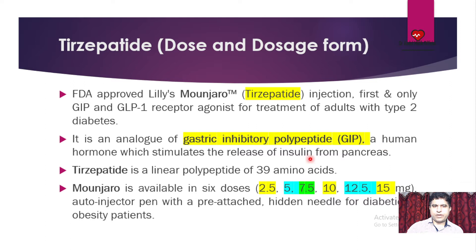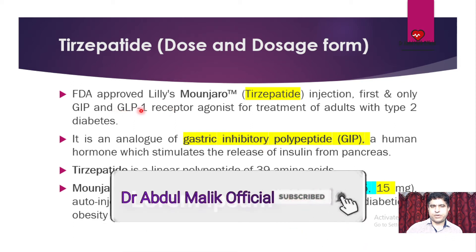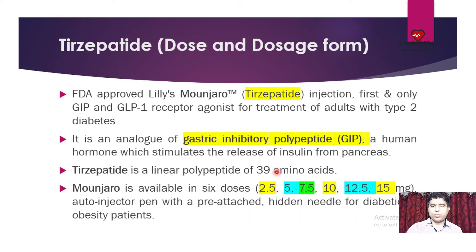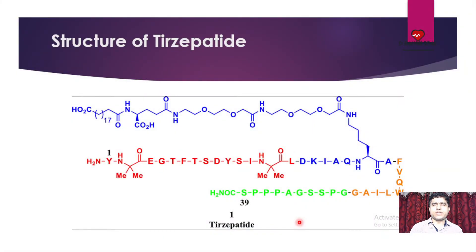Tirzepatide is a human hormone which stimulates release of insulin from the pancreas. It is not only working on GIP but also has a dual effect on GLP-1. Tirzepatide is a linear polypeptide of 39 amino acids. Mounjaro is available in six dosages: 2.5, 5, 7.5, 10, 12.5, and 15 milligram auto-injector pen with pre-attached hidden needle for diabetic and obesity patients. The structure of Tirzepatide has 39 amino acids and is related to GIP, the gastric inhibitory polypeptide found in our intestine.